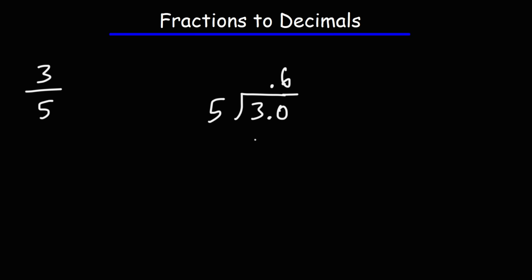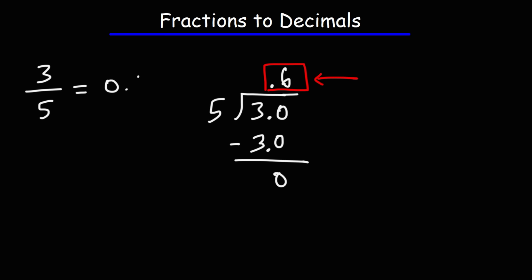So if we multiply 5 and 6, we get 30, or 5 times 0.6, that's 3.0. This gives us a difference of 0, which means we can stop. Our answer is what we see on top right here — so 3 over 5 is equal to 0.6 as a decimal.